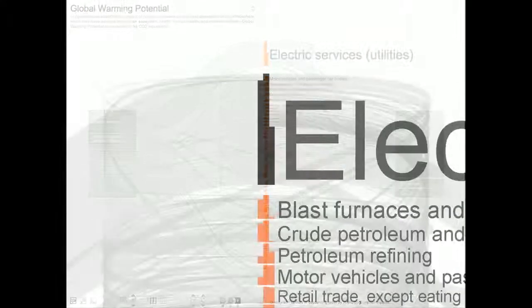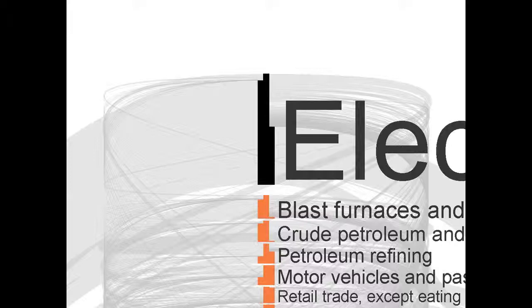If we zoom in on an individual sector, we can see that each sector in the network display mode is shown in a special way to reflect direct, upstream, downstream, and final consumption impacts, and the overall shape of the sector explains its environmental profile. These perspectives are more fully explained in another video.